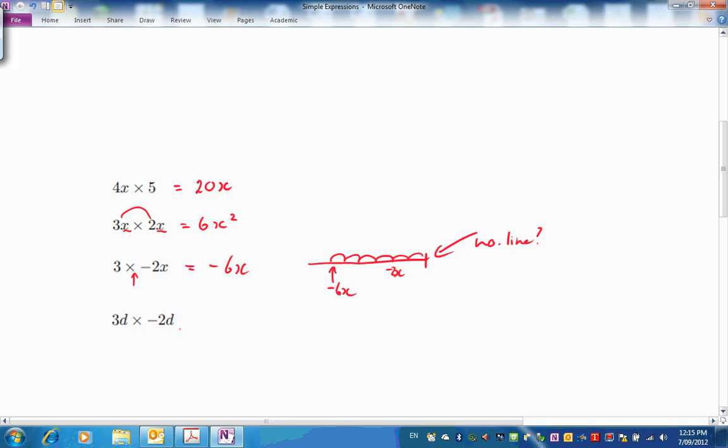So 3d times negative 2d here. Well, we'd better look at the numbers together. 3 times negative 2. Positive times a negative is a negative. And then here's a number d times d. A number times itself is the square. So we've got negative 6d squared. How did you go there? Did you get all those right?